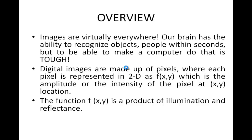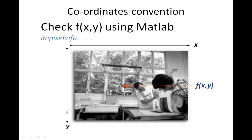Essentially, we look at digital images as a function f, where f is the pixel value at a particular location. If you look at this image, it has intensity values for all these pixels, where x is the coordinate in the x-direction and y is the coordinate in the y-direction. Each and every pixel is modeled as an intensity value f, which we are able to show as a gray level image.